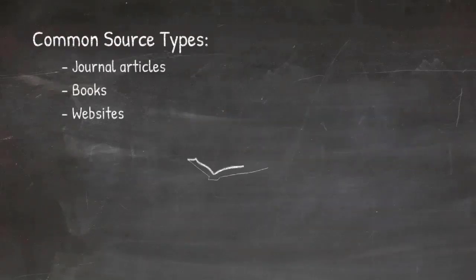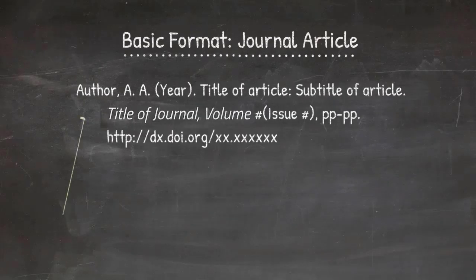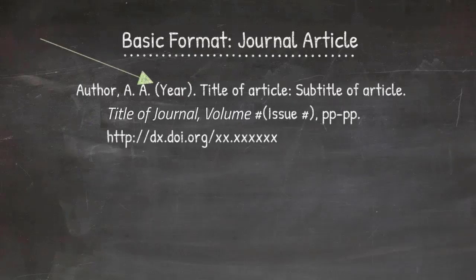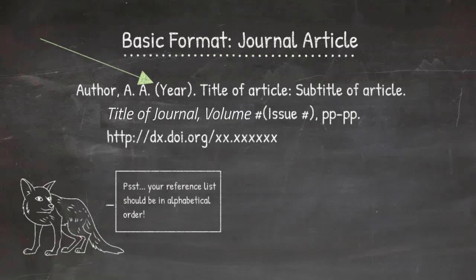Let's take a look at some of the more common source types. With a journal article in reference list format, we have the author or authors. You'll see it's going to be last name, comma, and then the initials, which will have periods after them and spaces between them. That's followed by the year in parentheses and then a period. This order makes it easy for your reader to look up the alphabetical reference list by last name, and then by year if the author has multiple works included.